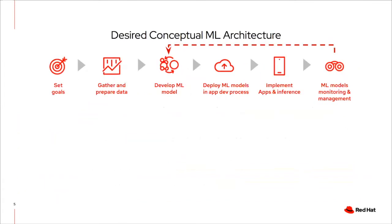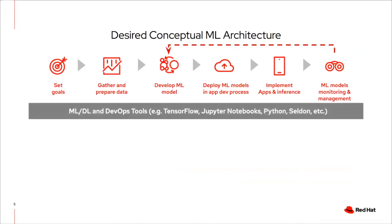The next key thing is the conceptual architecture you need to make all this real. At the top, the personas we talked about need tooling and software to get their job done. Examples include frameworks like TensorFlow and PyTorch. Data scientists love to use Jupyter Notebooks and programming languages like Python and R. To serve a model into production, tools like Seldon are used. You have to have an architecture that defines which toolchain each persona will use at each phase.